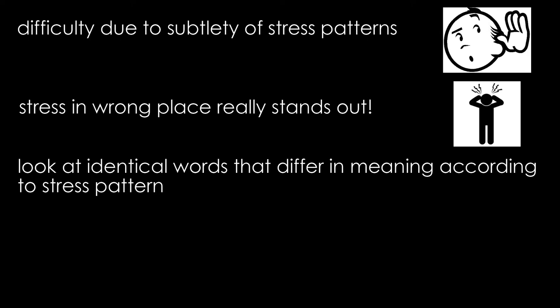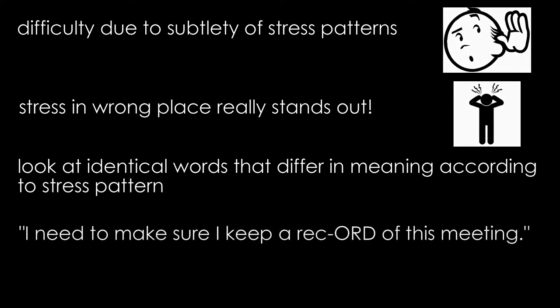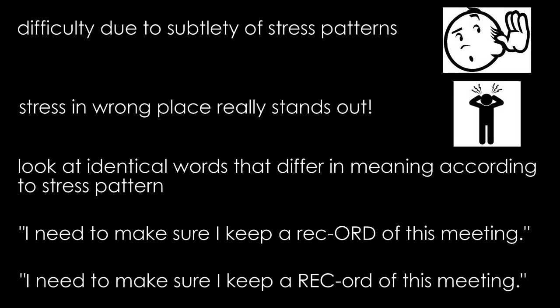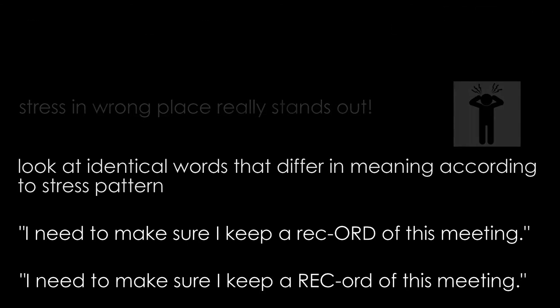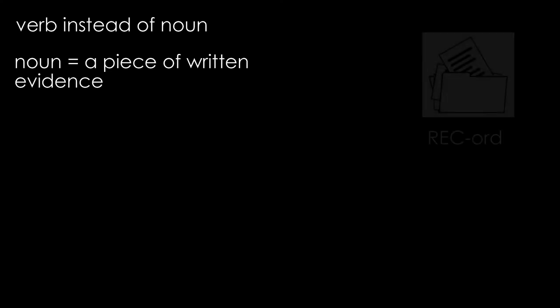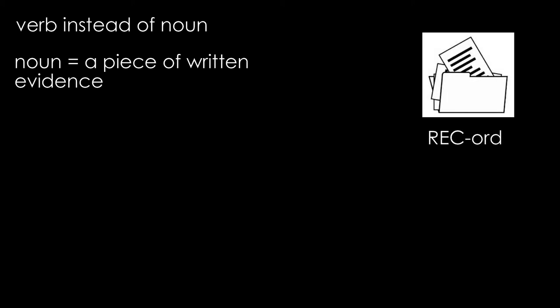For example, if I say 'I need to make sure that I keep a record of this meeting,' you'll know that something sounds wrong. What I should have said was 'I need to make sure that I keep a record of this meeting.' When we use the noun form of the word, meaning something which is a piece of evidence about the past such as a written account, we're talking about a 'record.' Note the stress is on the first syllable rather than the second.